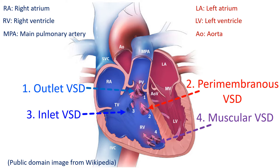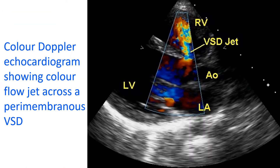Perimembranous VSD is in the upper part of the interventricular septum, where it is thin and like a membrane. The interventricular septum is the technical name for the wall between the two lower chambers. Muscular VSD is a defect in the thick muscular part of the interventricular septum. Perimembranous VSD can be suspected clinically when there is a heart murmur heard over the left side of the chest near the midline.